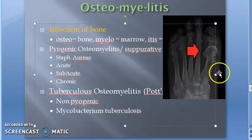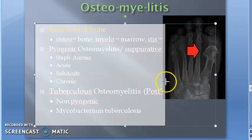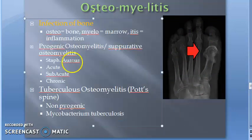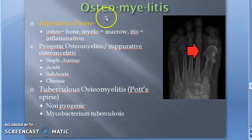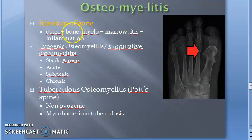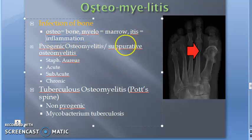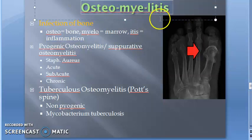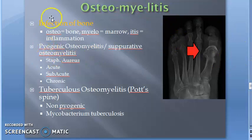Welcome. In this video we are going to start off with osteomyelitis — a very important topic for the exam, asked around eight times. Osteo means bone, myelo means marrow, and itis means inflammation. So you should pronounce it as osteo-myelitis; a hyphen has been put here just to help with pronunciation.